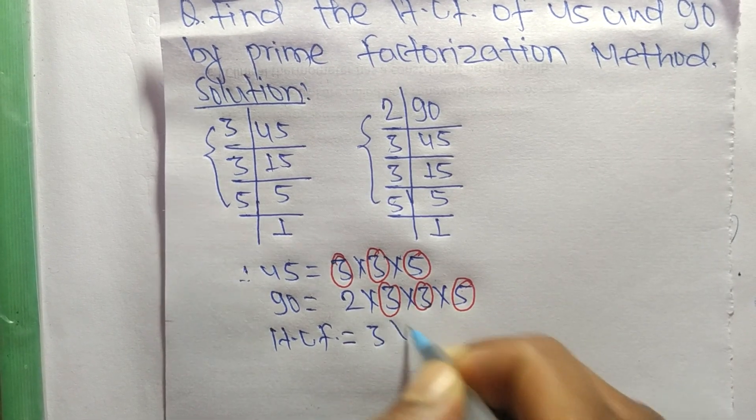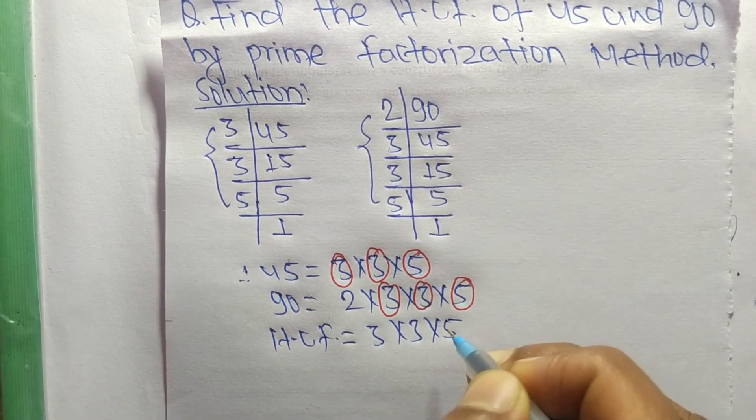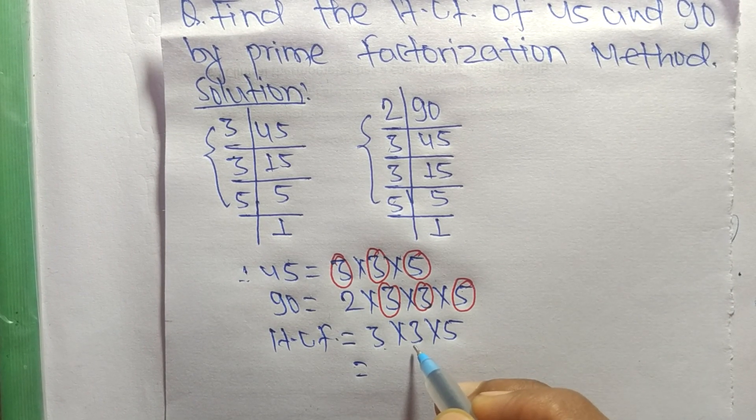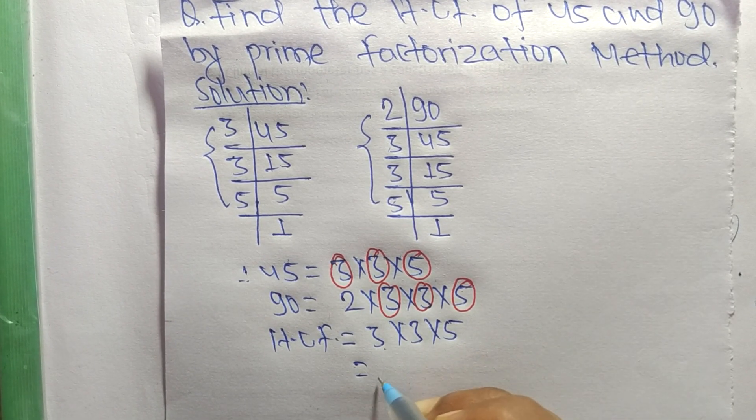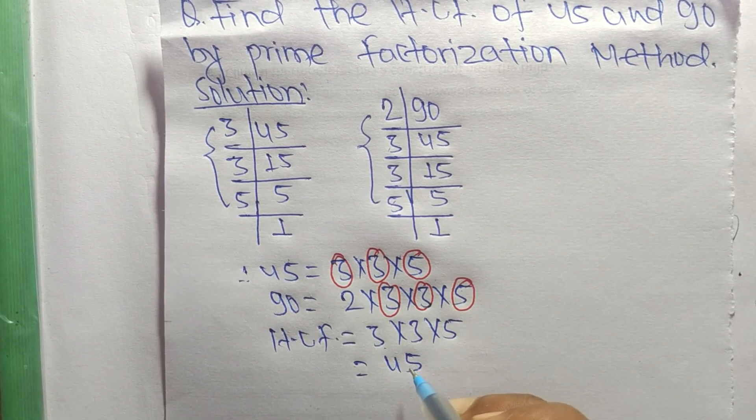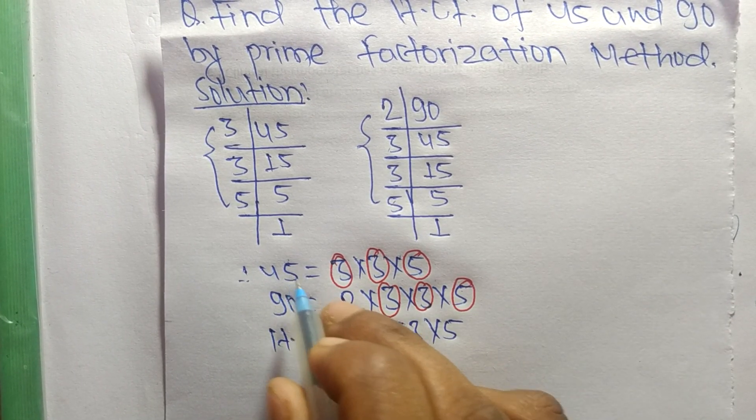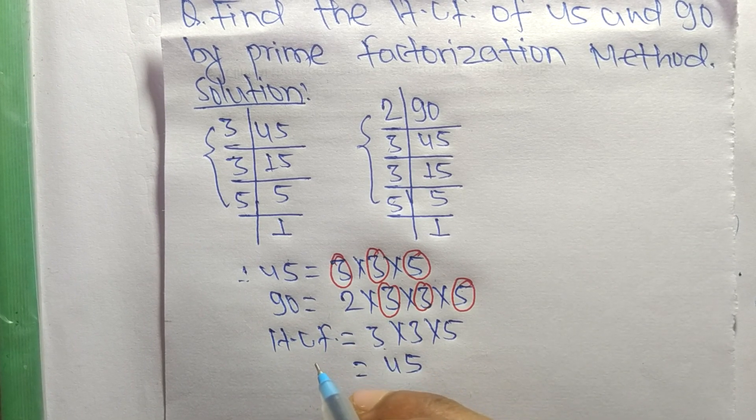So it is 3 times 3 equals 9, and 9 times 5 equals 45. So 45 is the HCF of 45 and 90. So this is all for today and thanks for watching.